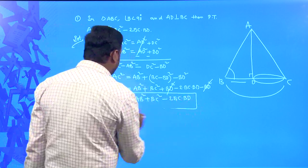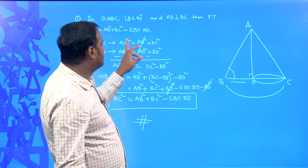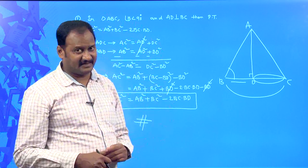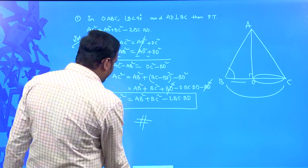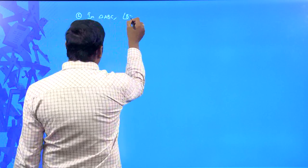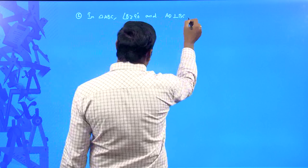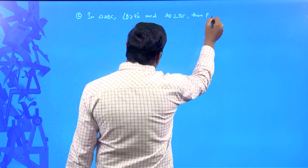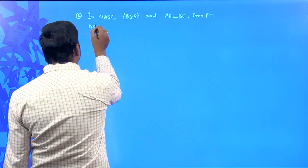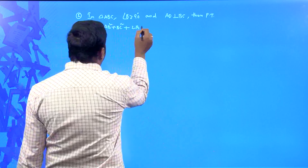Therefore AC² = AB² + BC² − 2BC·BD. This completes the proof when angle B < 90°. Now the second theorem: in triangle ABC, angle B is more than 90 degrees — an obtuse angle — and AD is perpendicular to BC. Then prove that AC² = AB² + BC² + 2BC·BD.